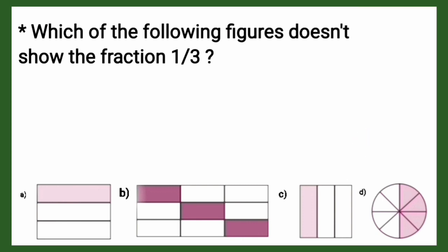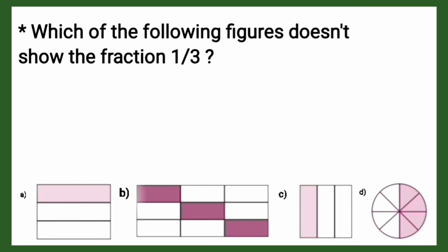Now in option D, half of the circle is shaded, so the fraction becomes 1/2, which is not equal to 1/3. So option D is the right answer.